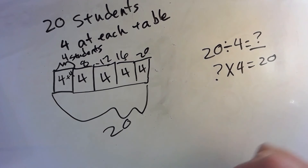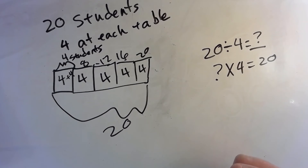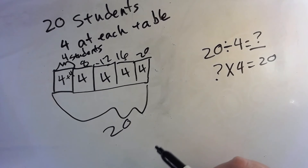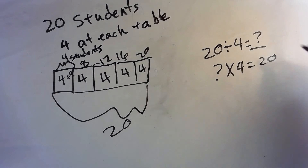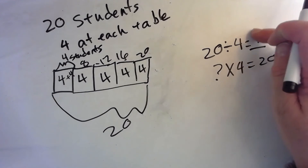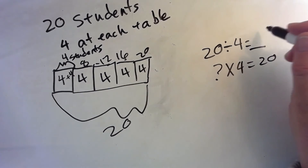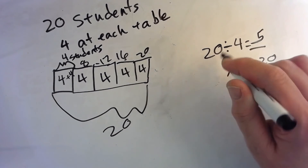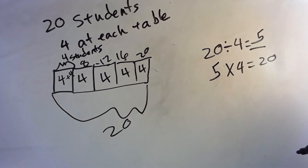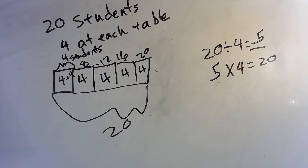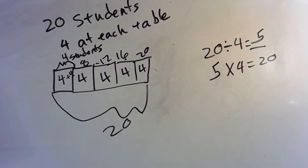So how many groups do we have? We skip counted until we reached 20 and now we have five groups. Five! So five times four equals twenty. Nice work!